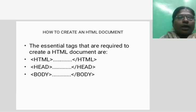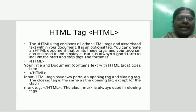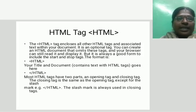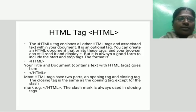How to create an HTML document. Some essential tags required to create an HTML document are: HTML, head, and body. The HTML tag encloses all other HTML tags and associates them within your document. It is an optional tag — you can create an HTML document that omits this tag and your browser can still read and display it. But it is always good form to include the start and stop tags.